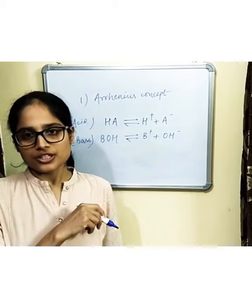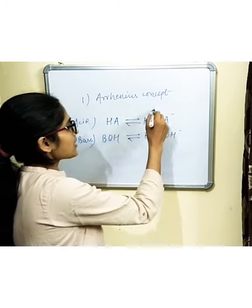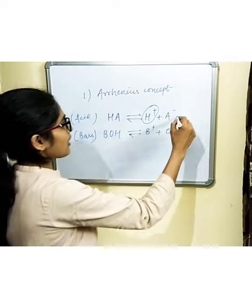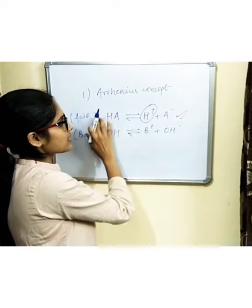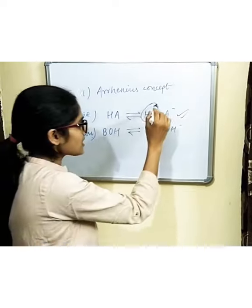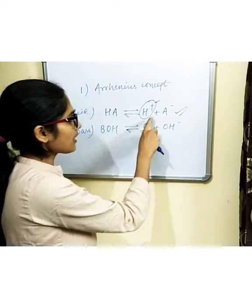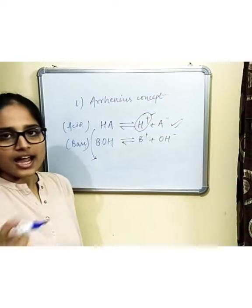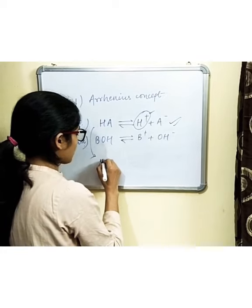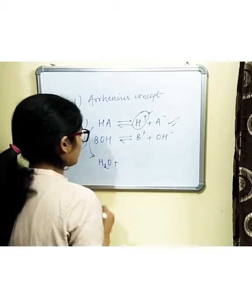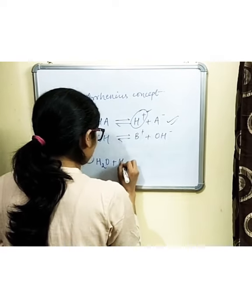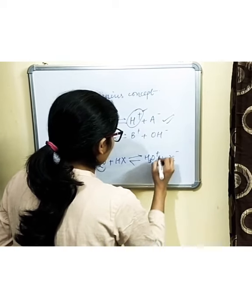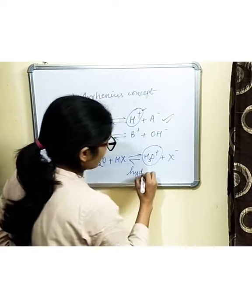As I discussed in my previous lecture on the properties of water, H+ ions have a strong tendency to get hydrated. So in the case of acids dissociating in water, these H+ ions have a strong tendency to associate with water molecules and exist as hydronium ions. The H+ ions combine with a water molecule to form hydronium ions.